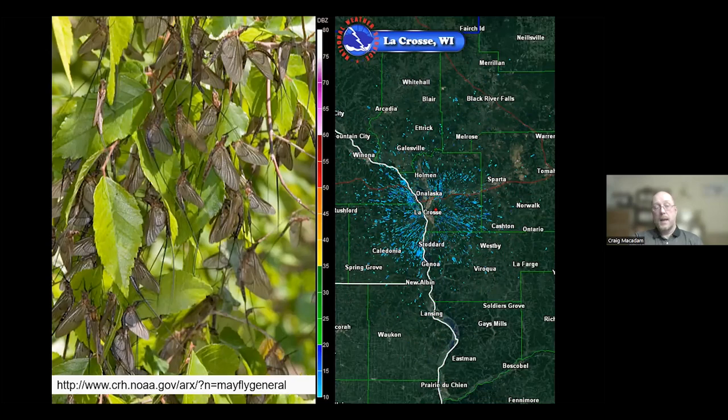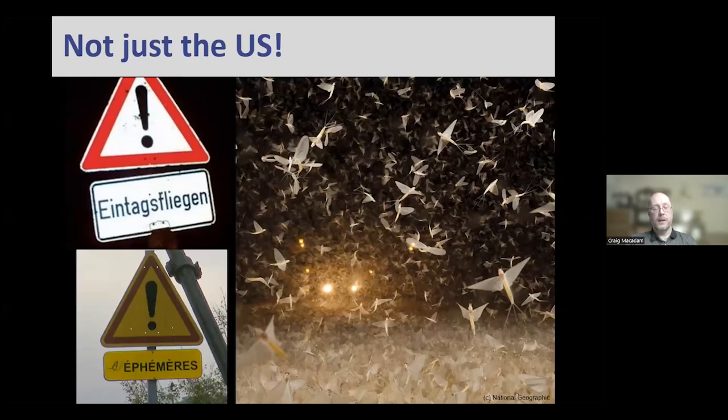It's not just the US where this happens — in Europe too, some species hatch in huge numbers. There are road signs in Germany and France warning people about mayflies. Species like Ephoron virgo emerge in such numbers that roads become completely covered. They're attracted to light, so lit bridges are particularly bad for these mayflies — they get attracted there and away from the river.